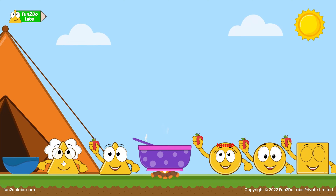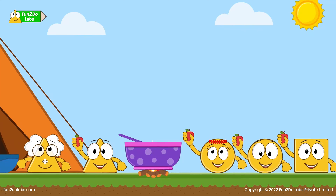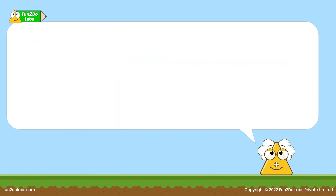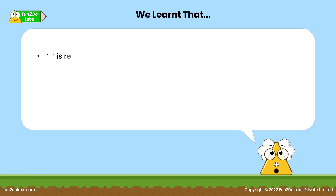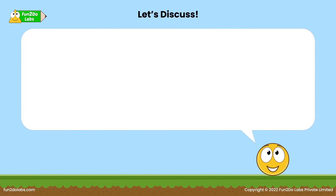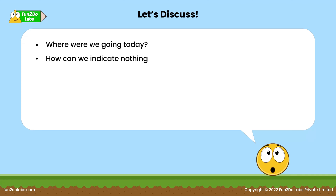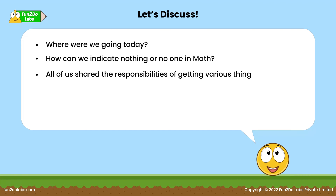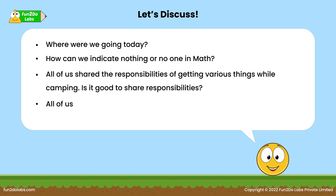Wow, the kids are amazing — does this prove that sharing is caring? We learned that this symbol is read as zero. Zero means nothing, or no objects. It is important to help others and share responsibilities. Sharing is caring! Let's discuss: where were we going today? How can we indicate nothing or no one in math? All of us shared the responsibilities of getting various things while camping. Is it good to share responsibilities?